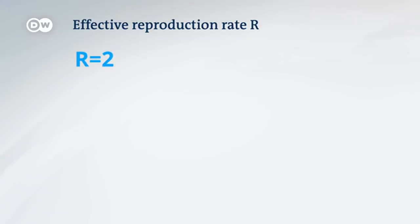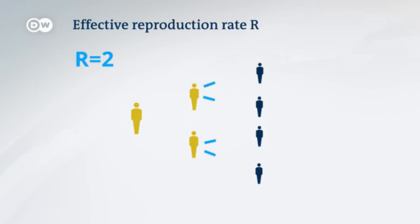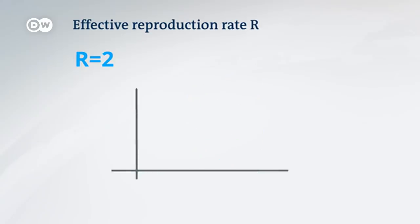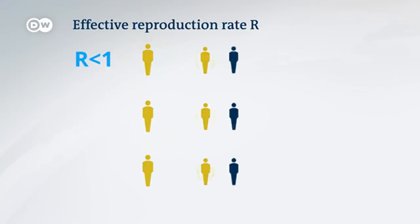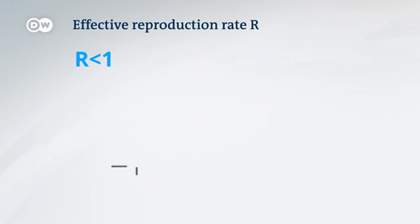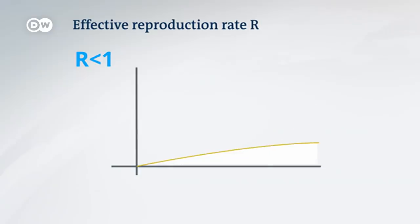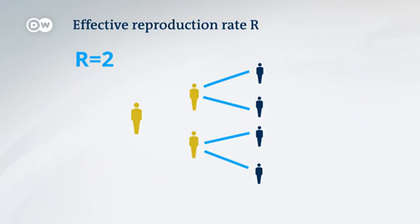The effective reproduction rate, R, describes the average number of people an infected person passes the virus on to. An R value of two means that one infected person passes the disease to two others, meaning the virus spreads exponentially. If the effective reproduction number is less than one, the number of new infections decreases. While the seven-day incidence offers an initial estimate, the reproduction rate gives you an idea of the dynamics — how quickly the infection is currently spreading from one person to the next.